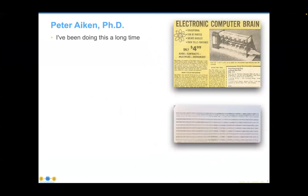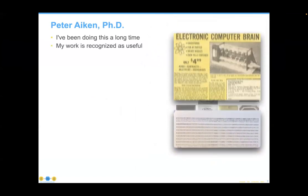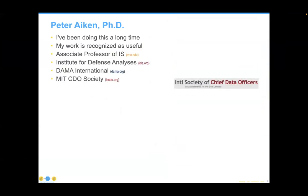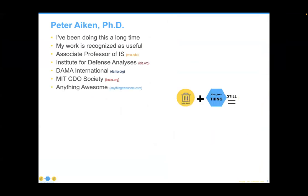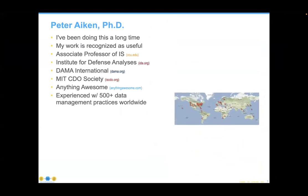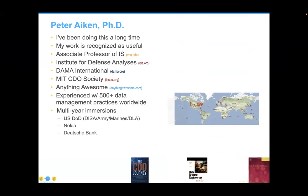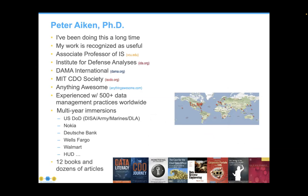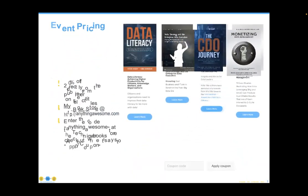Now let me introduce our speaker for the webinar series, Dr. Peter Akin. Peter is an acknowledged data management authority and associate professor at Virginia Commonwealth University, president of DEMA International, and associate director of MIT's International Society of Chief Data Officers. For more than 35 years, Peter has worked with hundreds of data management practices in 30 countries. Among his 12 books are many firsts — starting before Google, before data was big, and before data science. Peter has founded several organizations that have helped more than 200 organizations leverage data-specific savings measured at more than $1.5 billion.